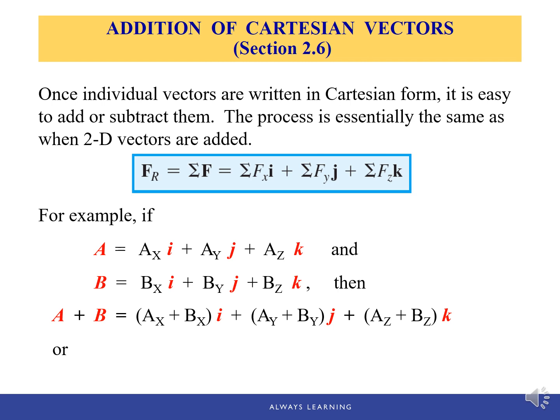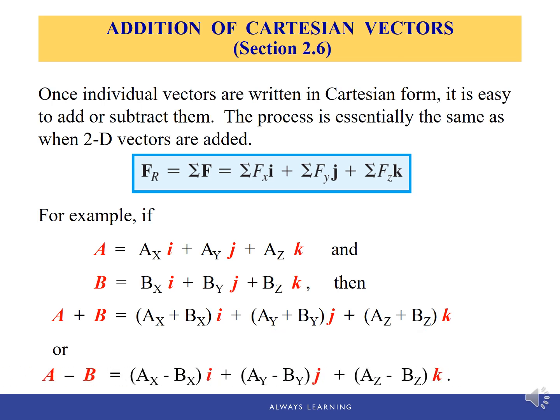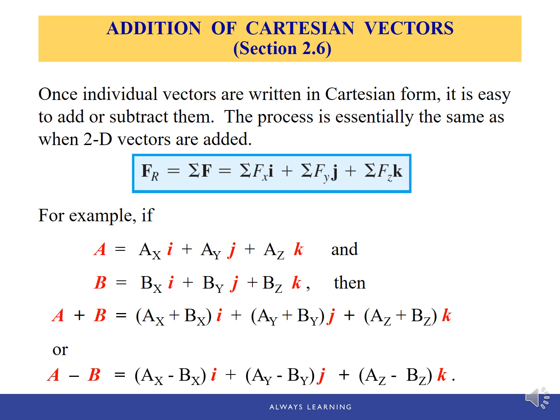Ax plus Bx gives the x component of the resultant, Ay plus By gives the y component, and Az plus Bz gives the z component. If you need to find A subtract B, it will be similar — the corresponding components of the resultant will just be the differences between the corresponding components.